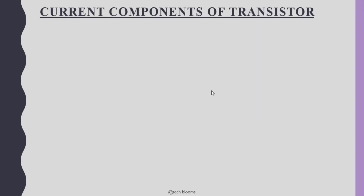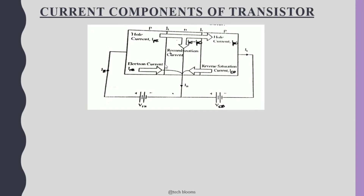Now we look at the current components of the transistor. This diagram shows all current components: hole current at the emitter, hole current at the collector, electron current at the emitter, the reverse saturation current, and the recombination current. When the transistor is unbiased, there is no flow of current. When the emitter-base junction is forward biased and the collector-base junction is reverse biased, there is a potential variation at both junctions, leading to current flow. The emitter current consists of hole current and electron current at the emitter.